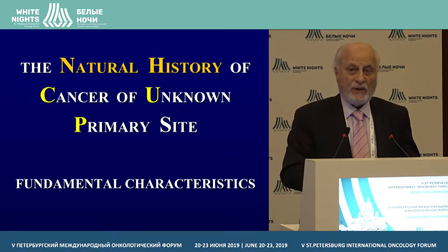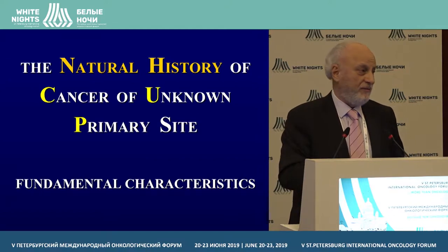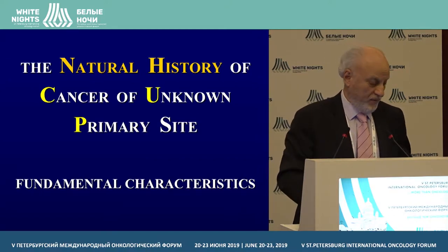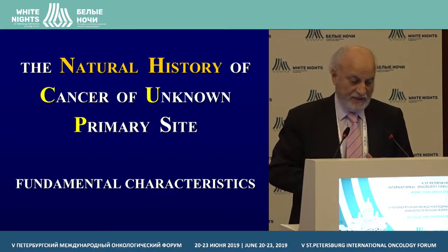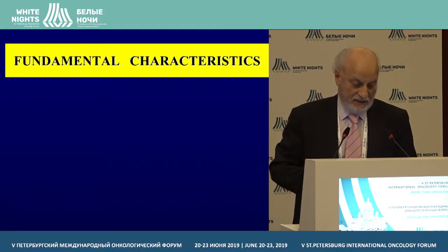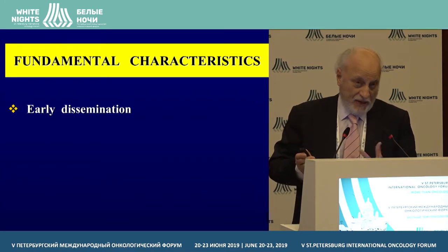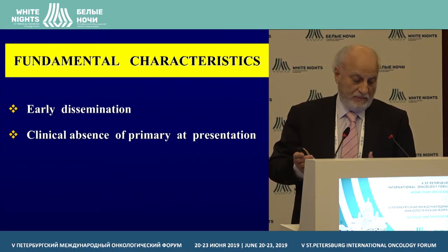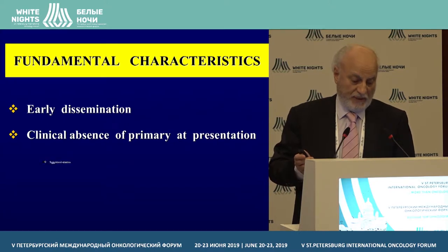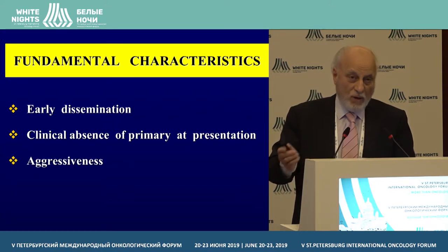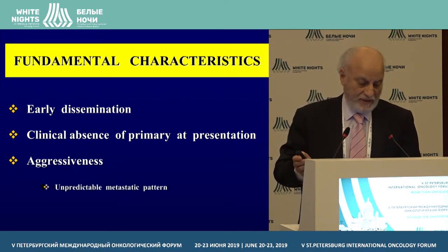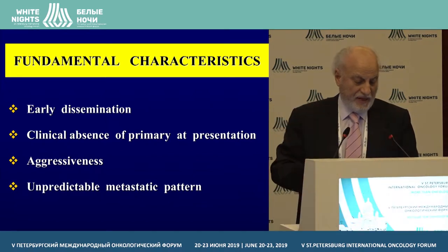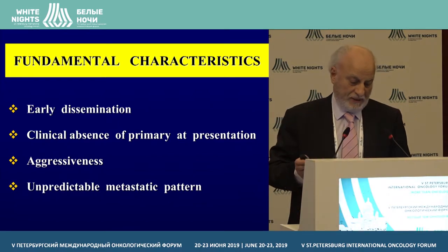The second question is: what is the natural history of patients with cancer of unknown primary? There are some characteristics of this disease. First, there is the early dissemination. There is a clinical absence of the primary site at presentation. Most of the tumors in cancer of unknown primary are aggressive diseases, and there is an unpredictable metastatic pattern.